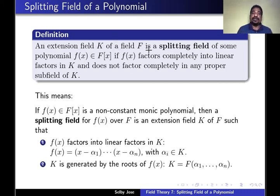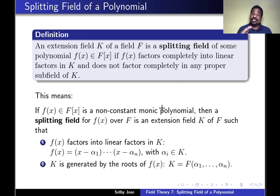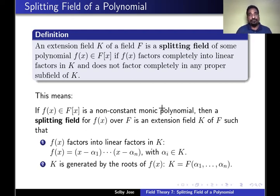An extension field k over a field f is a splitting field of some polynomial f(x) if f(x) factors completely into linear factors in k and does not factor completely in any proper subfield of k. This means if f(x) is a non-constant monic polynomial over f, then the splitting field of f(x) over f is an extension k of f such that f(x) factors as (x - alpha₁)(x - alpha₂)···(x - alphaₙ) where each alphaᵢ is in k, and k is generated by the roots: k = f(alpha₁, alpha₂, ..., alphaₙ).